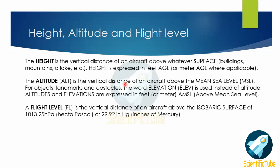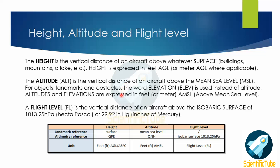Next we will speak about flight level. Flight level is the vertical distance of an aircraft above the isobaric surface of 1013.25 hectopascals, which is equivalent to 29.92 inches of mercury. Here you can see a compiled table summarizing everything discussed about height, altitude, and flight level.